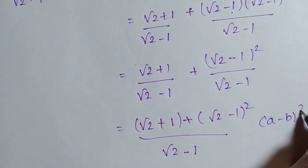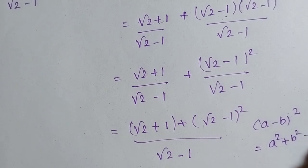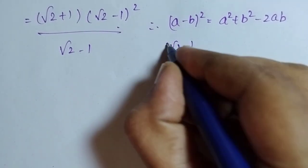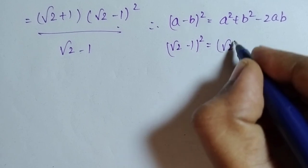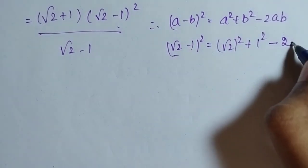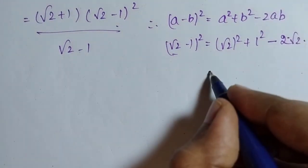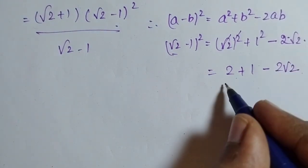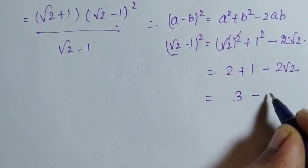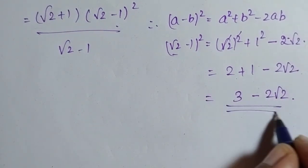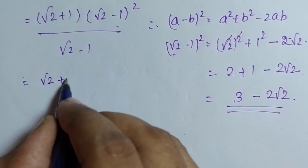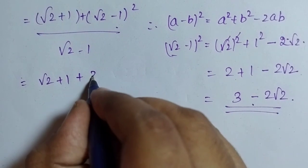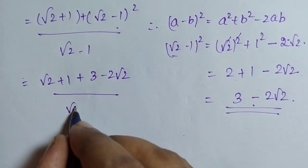Now (√2 − 1)² is in the format of (A − B)², and the formula is A² + B² − 2AB. Applying the formula: (√2 − 1)² = (√2)² + 1² − 2 × √2 × 1 = 2 + 1 − 2√2 = 3 − 2√2. So the expression becomes (√2 + 1 + 3 − 2√2) / (√2 − 1).